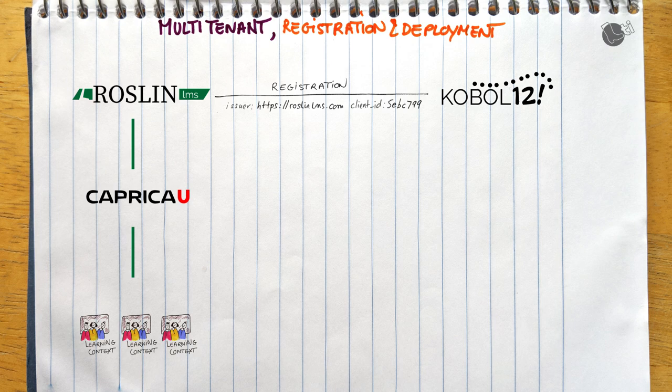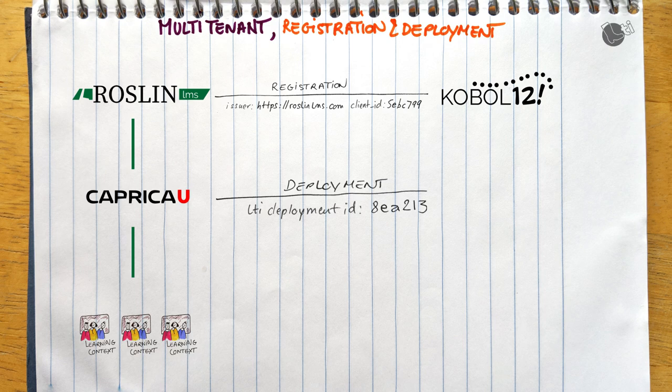Now Caprica U decides to purchase access to Cobalt 12. Since Cobalt 12 is already configured, the administrator just needs to turn it on. When turning it on, the administrator may also have a choice to do some additional configuration or restrictions, but that is not required. When it is deployed, RoslynLMS will issue a unique deployment ID identifying this deployment. This deployment ID is platform-generated and cannot be modified — it identifies the deployment of that tool in this platform.